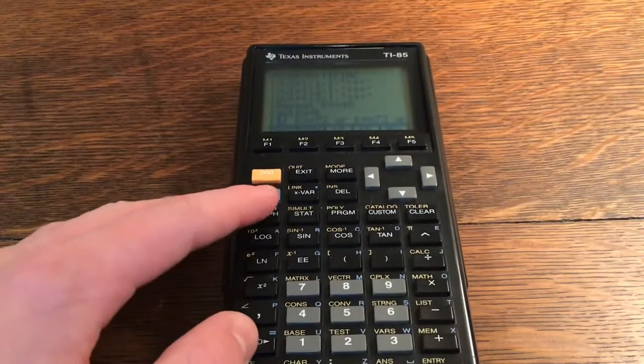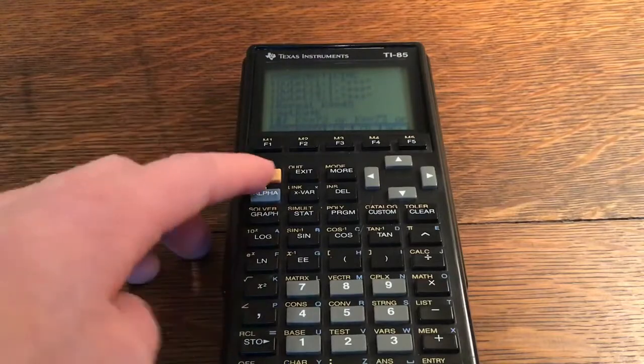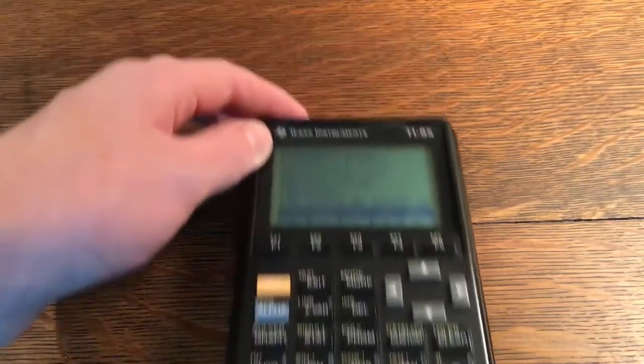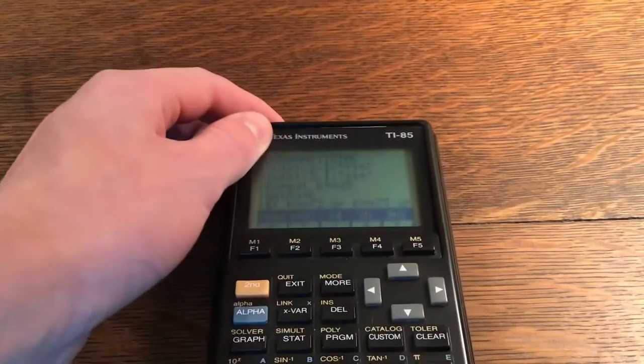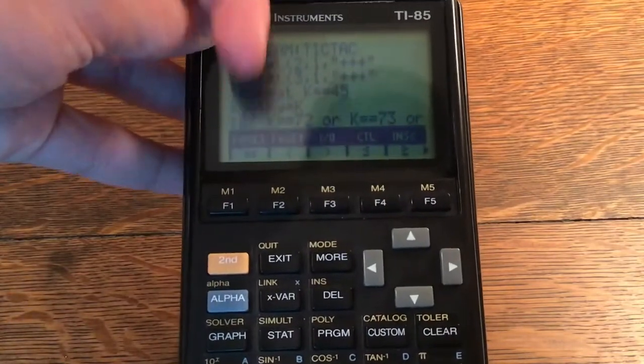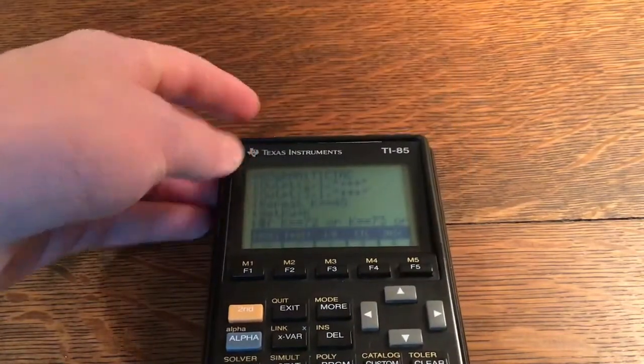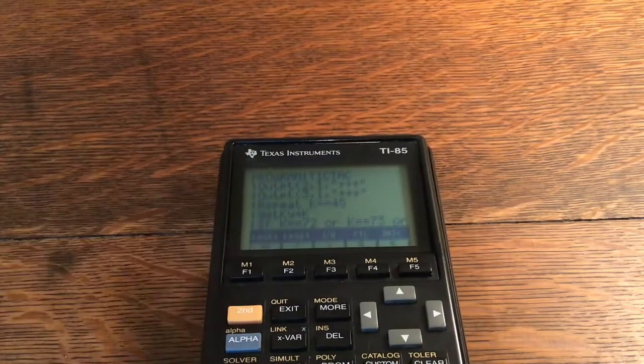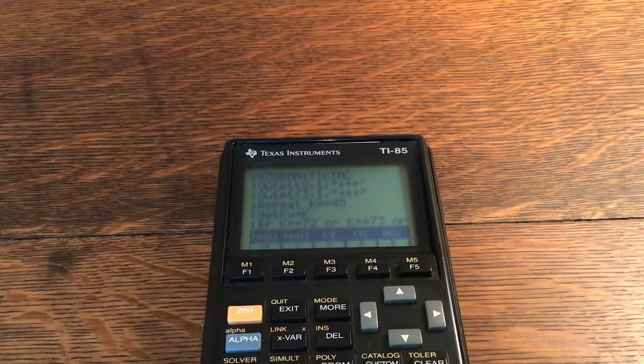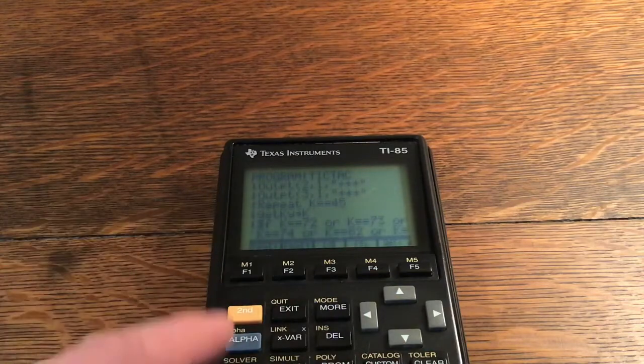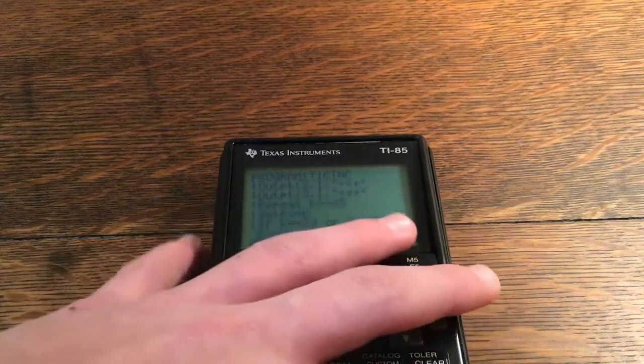It's not this equal to that you get from Alpha and Store. You actually do Second and two, which will take you into the Test menu, and it will be the first F button, so F1 gives you the equal to equal to. After you get that equal to equal to, you're going to use that throughout the code. It's not that long, so don't worry. Just make sure that you're doing that and not using the equals by Alpha and Store.